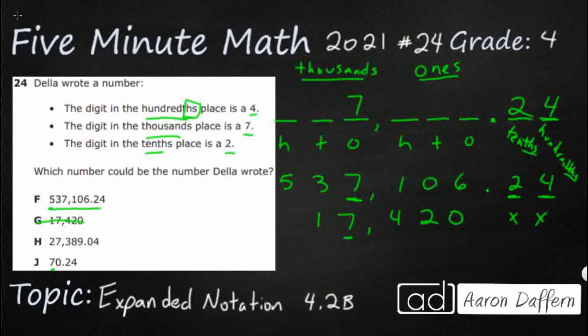H. We've got 27,000, at least it goes to the hundredths place, so that's good. 27,389 and 4 hundredths. So if we're looking at what we're needing, we have a 7 in the thousands place, they all have a 7 in the thousands place, that's great. It doesn't really matter what any of those other digits are, but we've got a 4 in the hundredths. Here's our issue right here. It has a 0 in the tenths. It should have a 2 in the tenths. So just that one little tiny digit makes H incorrect.